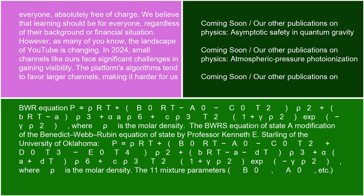The BWRS equation of state, a modification of the Benedict-Webb-Rubin equation of state by Professor Kenneth E. Starling of the University of Oklahoma.